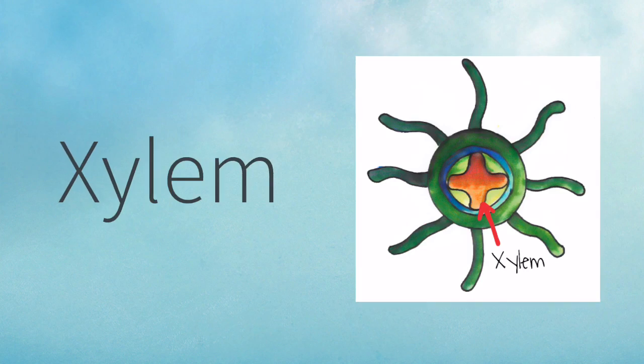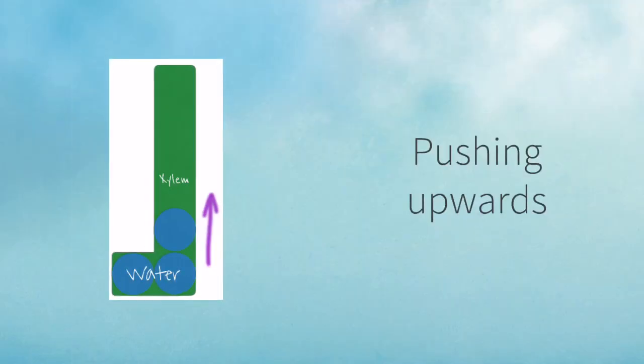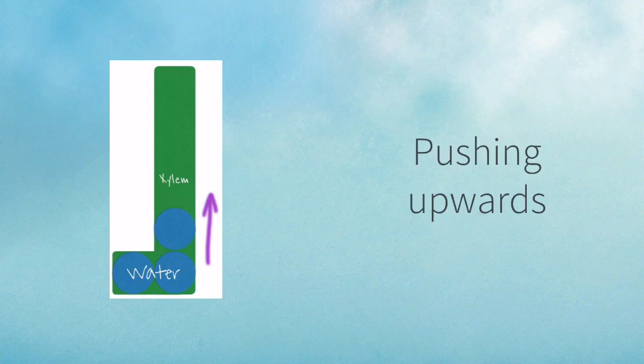Once water has entered the root hair cells, it moves eventually to the xylem at the centre of the root. So you have to imagine this continual movement of water molecules from the soil into the cells of the root hairs and then onwards into the xylem vessels or tracheids.